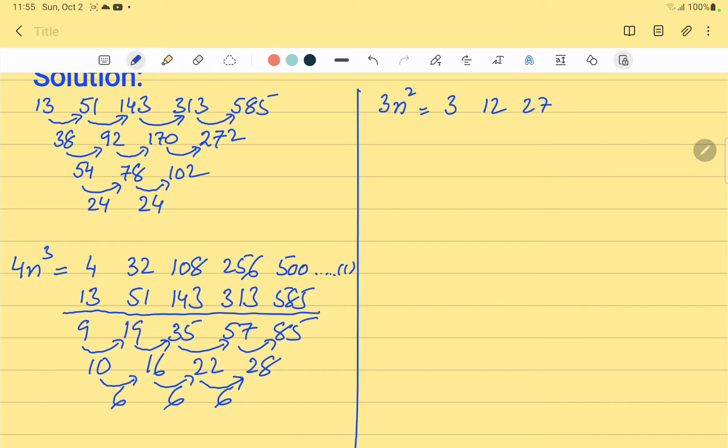For 3, it is 27. For 4, it is 48. And for 5, it is 75. We call this series as series number 2.